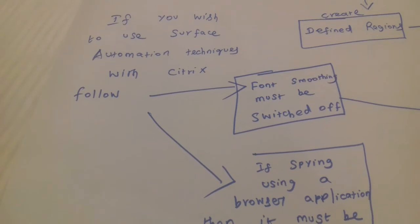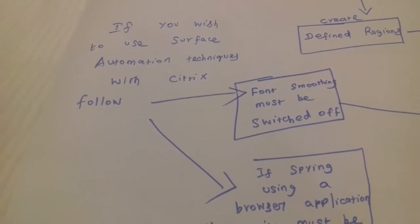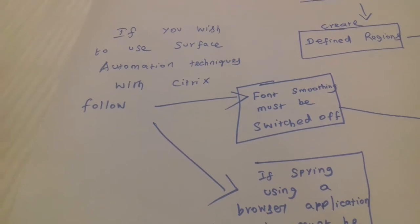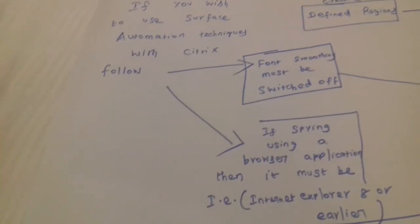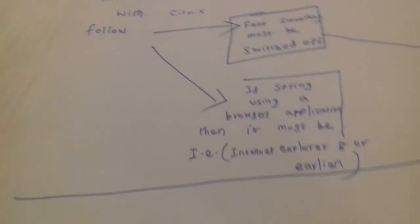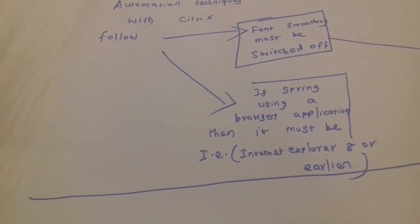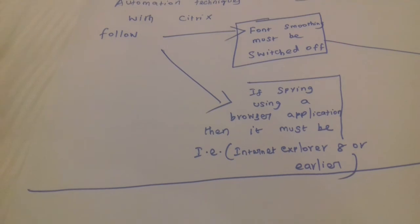When you want to start inside the Citrix environment in surface automation, you have to verify that font smoothing must be switched off. That is one important thing.